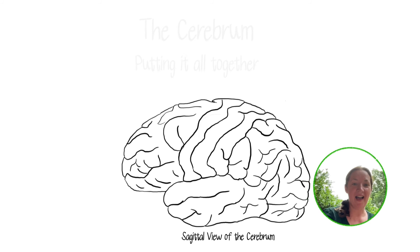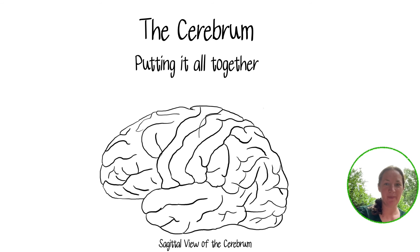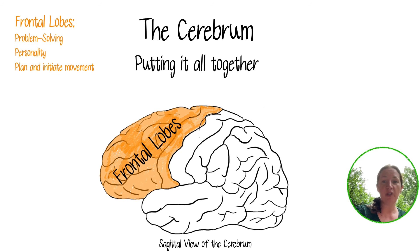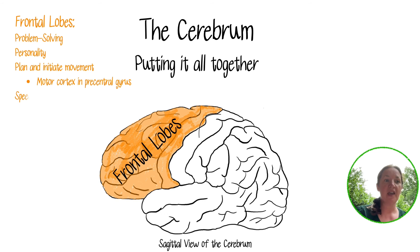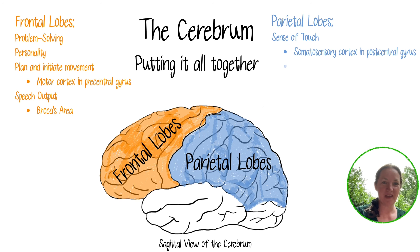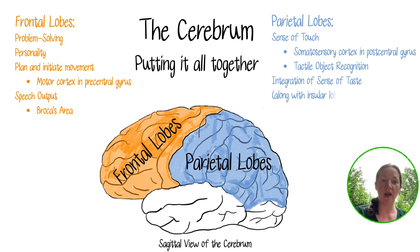Let me put it all together. The frontal lobes have quite a lot of different jobs. The prefrontal cortex in particular is important in problem solving, forming your personality, and helping you plan and initiate movements. The precentral gyrus contains your primary motor cortex, and Broca's area handles speech output. The parietal lobes are important in processing your sense of touch via the somatosensory cortex in the postcentral gyrus, as well as tactile object recognition. They also help integrate your sense of taste, working alongside the insular lobe.